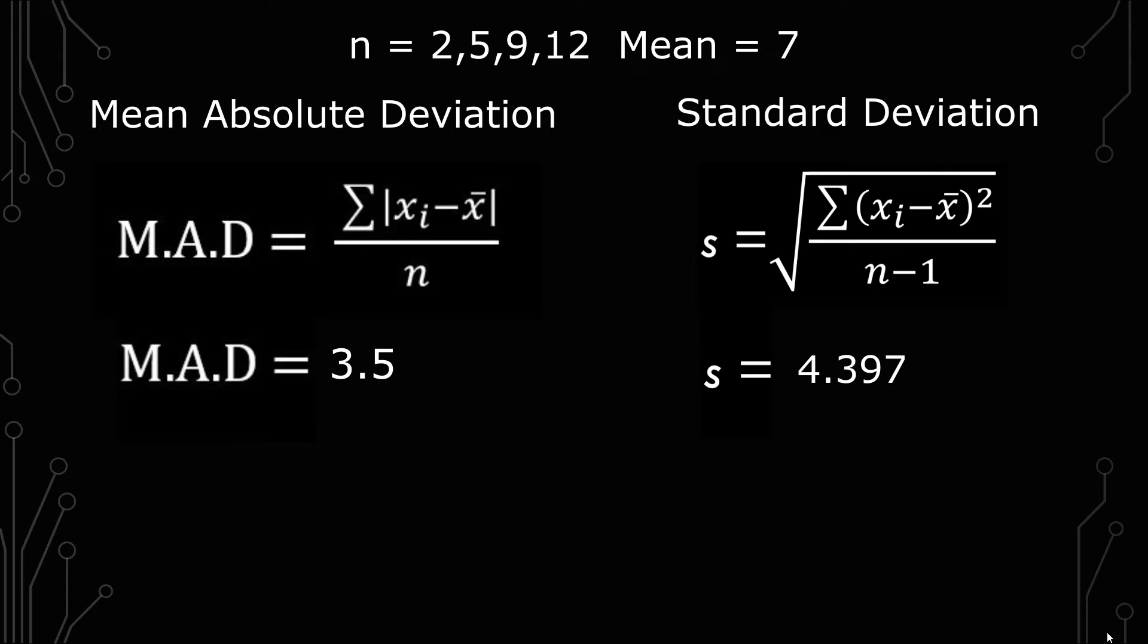So both of them kind of have a similar aspect there. But the mean absolute deviation kind of cuts right to the chase and divides by the observations, which is very similar to what the mean does. And then it just gives you 3.5, which is pretty straightforward.